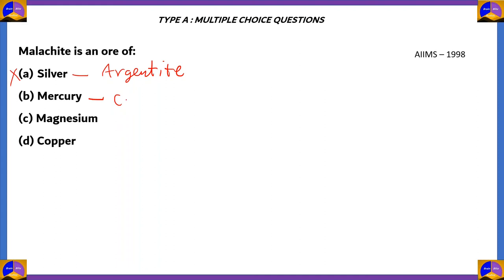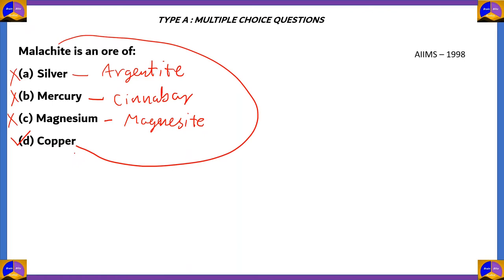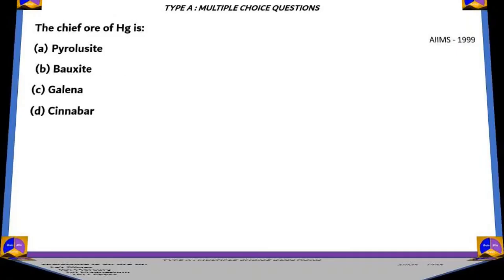Option B, mercury — mercury is produced from the ore cinnabar, so option B is also incorrect. Option C, magnesium is produced from magnesite, so option C is also incorrect. The right answer is option D — malachite is the ore of copper. Copper is the right answer.